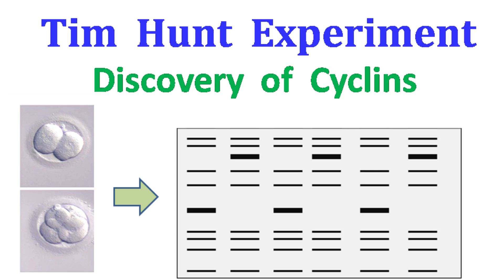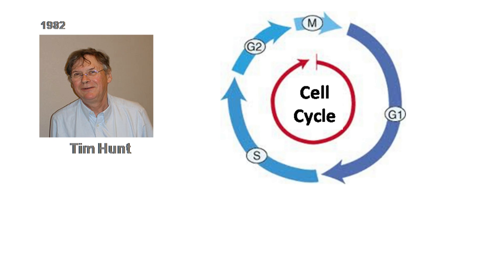Hey everyone, Quick Biochemistry Basics here. Let's talk about Tim Hunt's experiment. In 1992, Tim Hunt discovered cyclin, a protein that has an important role in the cell cycle.